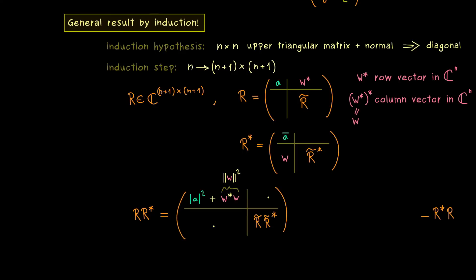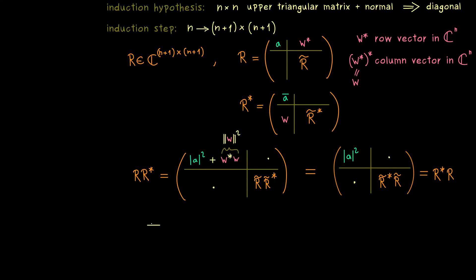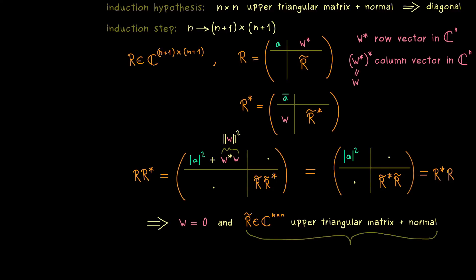For the other order R* R, the first entry is just |A|². Since both sides must be equal, the only conclusion is that ‖W‖² = 0, so W is the zero vector. Looking at the lower-right corner, we also find that R̃ is a normal matrix. So W = 0 and R̃ is a normal upper triangular matrix, allowing us to apply the induction hypothesis: R̃ must be diagonal. Together these results imply that our original matrix R is a diagonal matrix, completing the proof by induction.